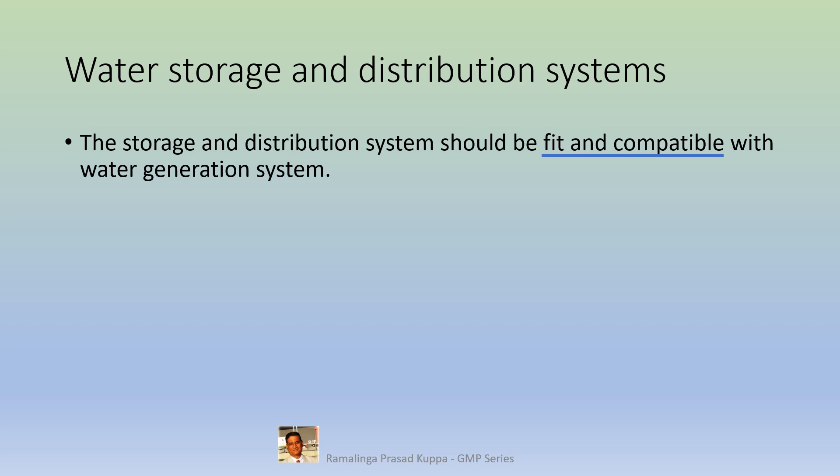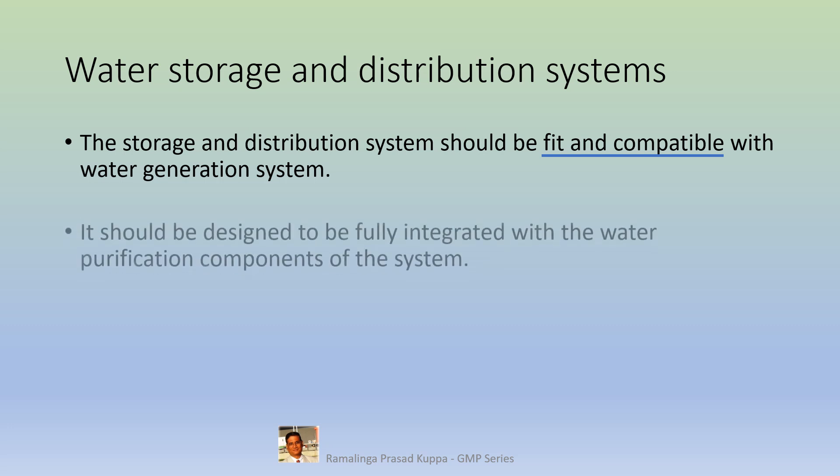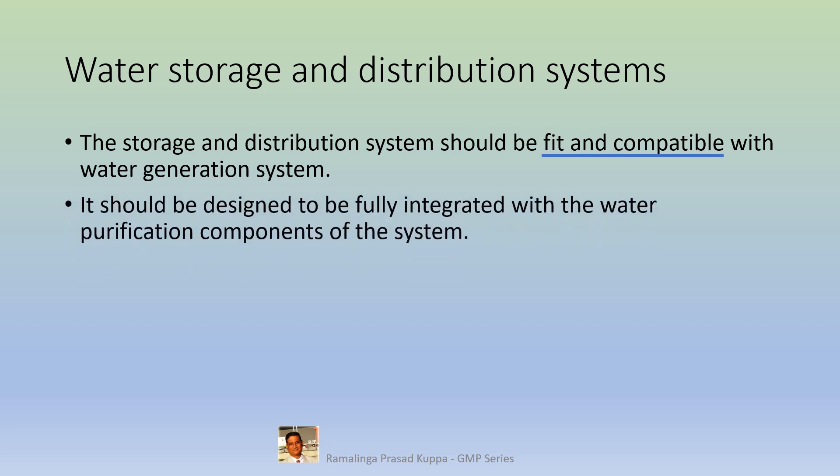Other materials such as unplasticized polyvinyl chloride may be used for treatment equipment designed for less pure water such as ion exchangers and softeners. It should be designed to be fully integrated with the water purification components of the system.